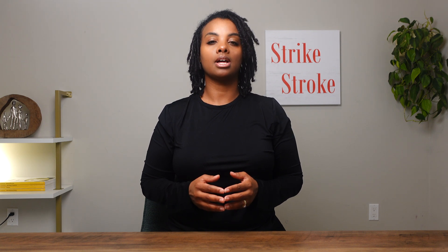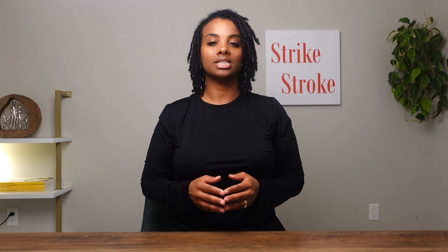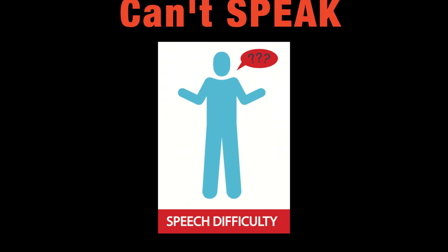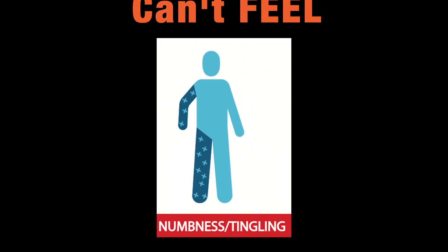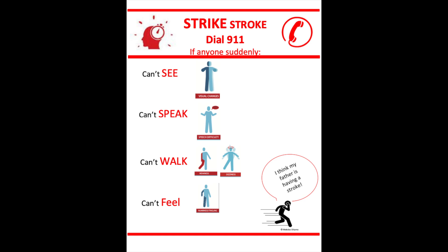Always remember to dial 9-1-1 if you or someone near you suddenly can't see, can't speak, can't walk, or can't feel. Let the operator know that you or someone near you might be having a stroke, so that you can be transported to the nearby comprehensive or primary stroke center for rapid stroke analysis and tailored treatment.